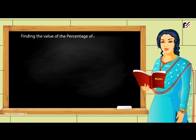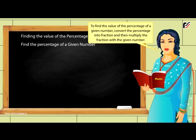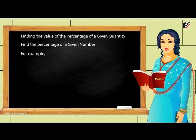Finding the value of the percentage of a given quantity: To find the value of the percentage of a given number, convert the percentage into a fraction and then multiply the fraction with the given number. For example, find 50% of 75: 50/100 × 75 = 75/2 = 37½.